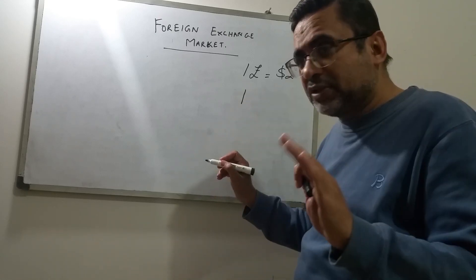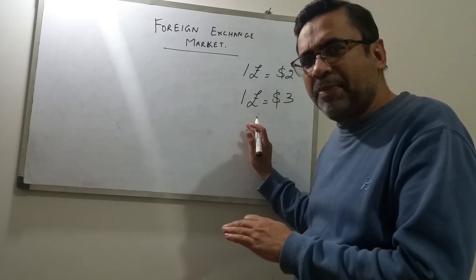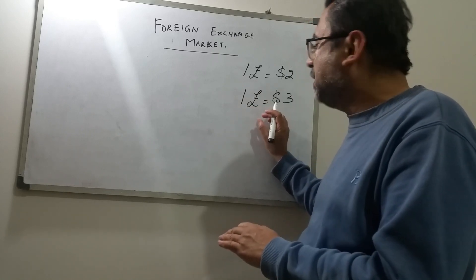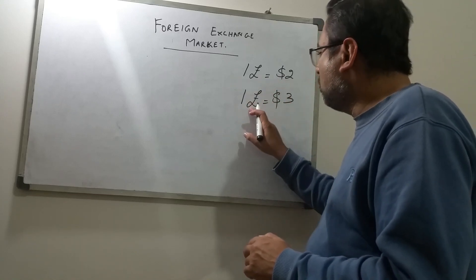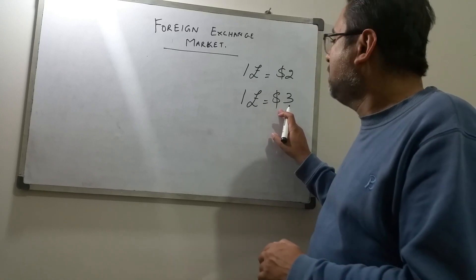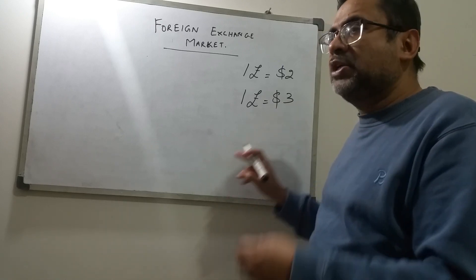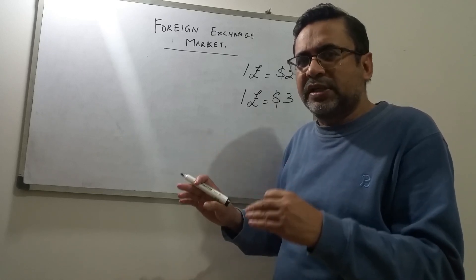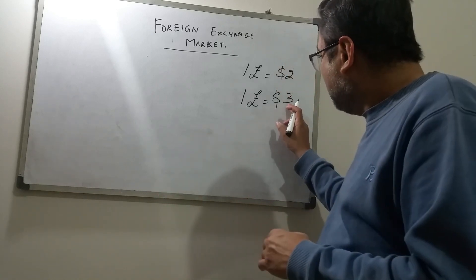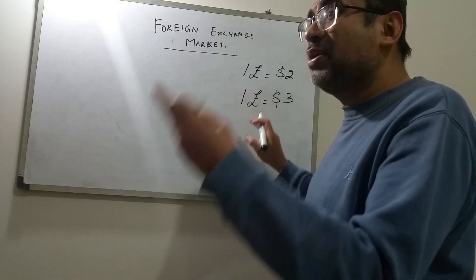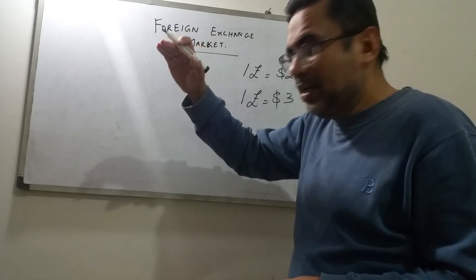So now after the demand for the pound has gone up, one pound is able to buy three dollars. What has happened? The pound has become more expensive, more powerful. One pound was previously buying two dollars; one pound can now buy three dollars. Look at it the other way — the dollar: previously two dollars could buy one pound, but now you require three dollars to buy the same one pound. So the value of the dollar has gone down.